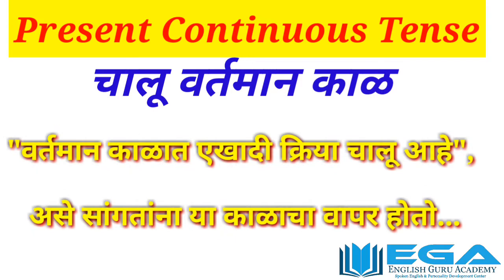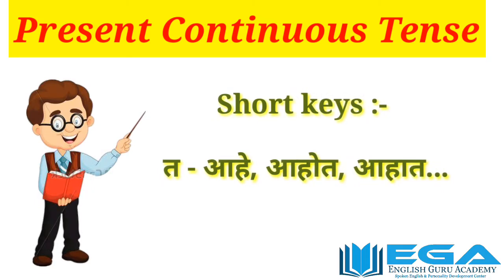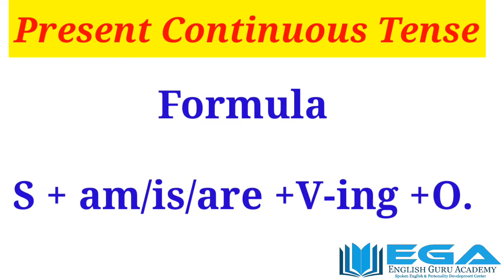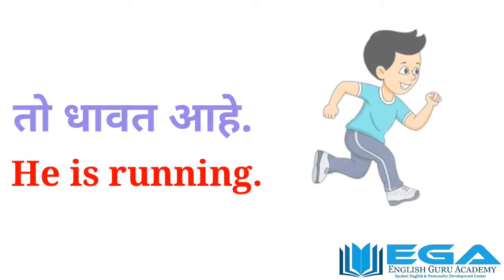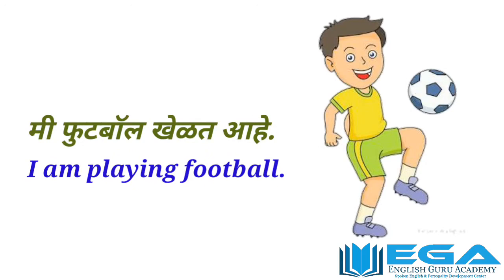This tense is used to express an ongoing action in the present. Marathi sentences in this tense end with words like 'ahe,' 'ahot,' or 'ahat.' In English, the structure is: Subject + is/am/are + verb+ing + object. For example: 'to dhawat ahe' — He is running. 'to gane gaat ahe' — He is singing a song. 'mi football khelt ahe' — I am playing football.